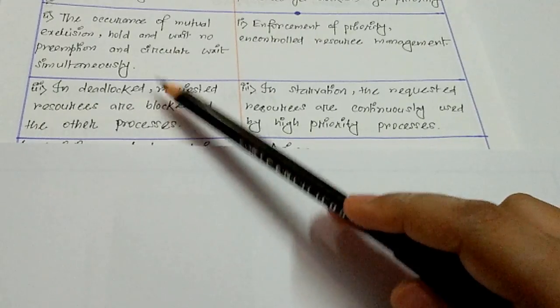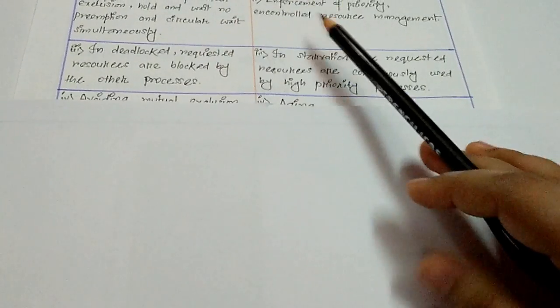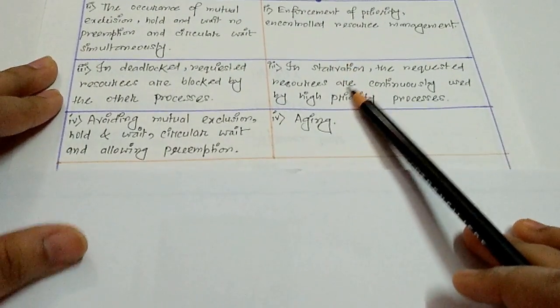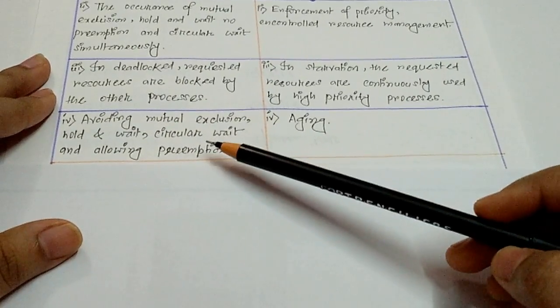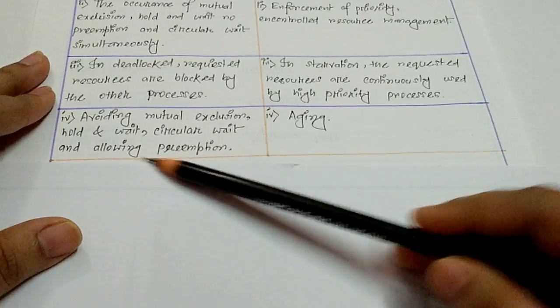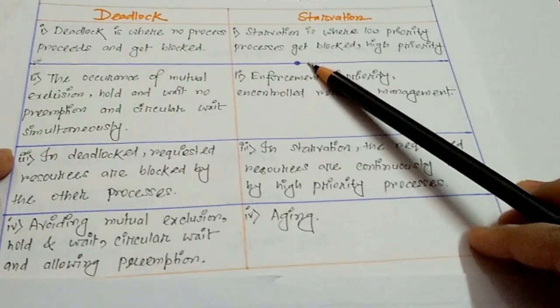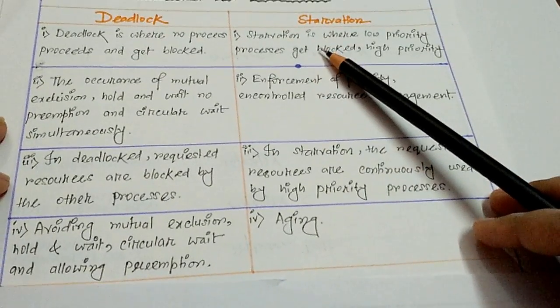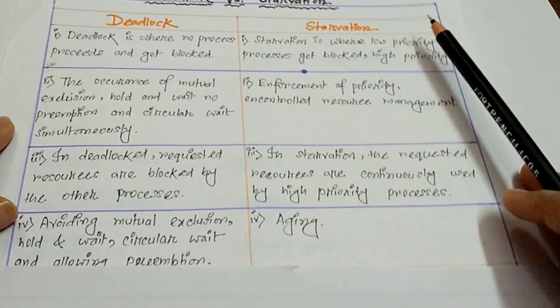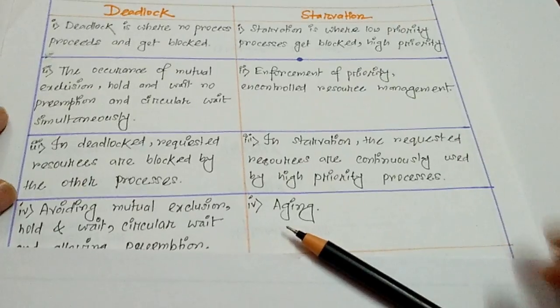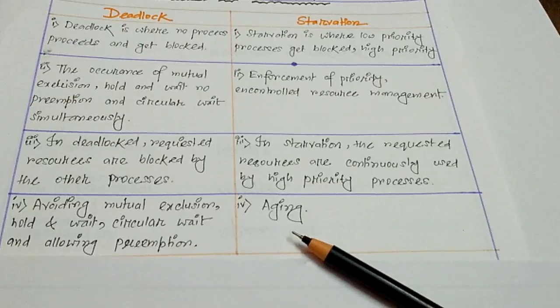And the last is how it can be controlled: avoiding mutual exclusion, hold and wait, circular wait, and allowing preemption for deadlock. The effect of starvation is aging. So this is all the difference of deadlock and starvation. I hope it is very useful.